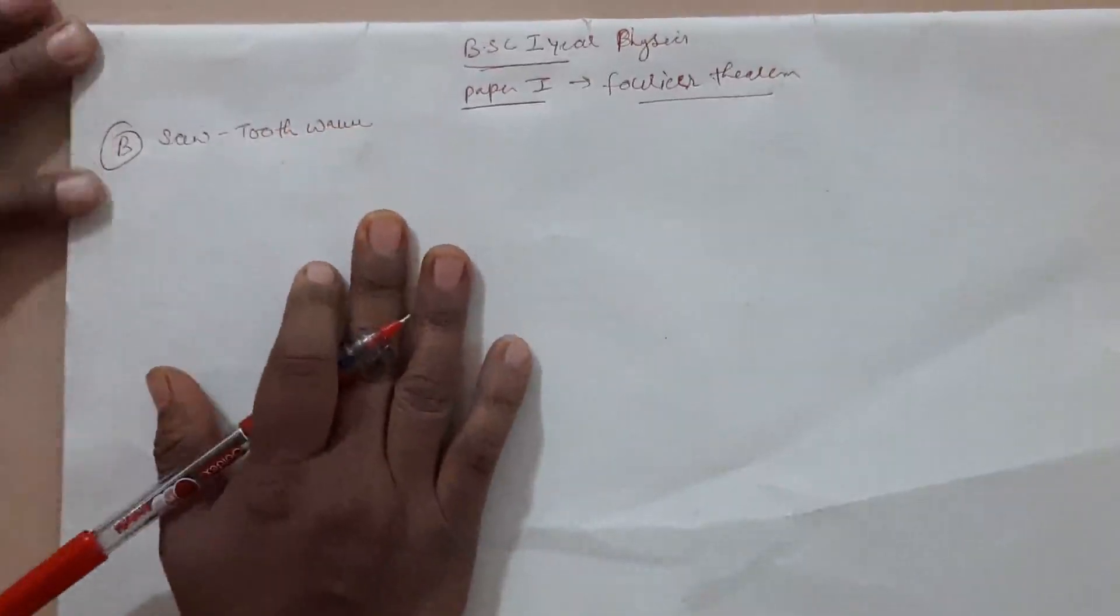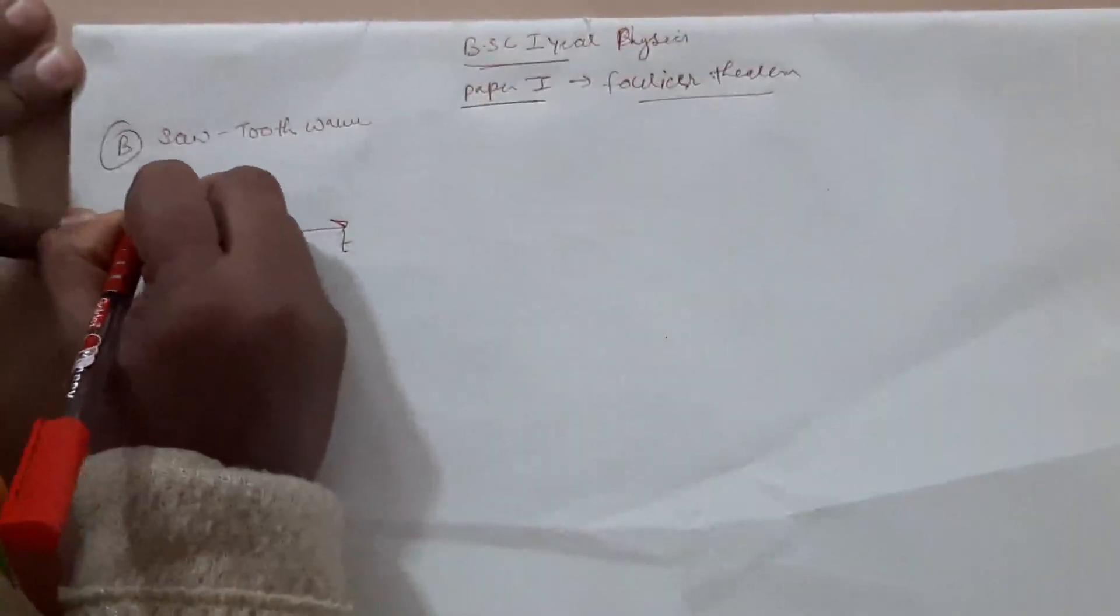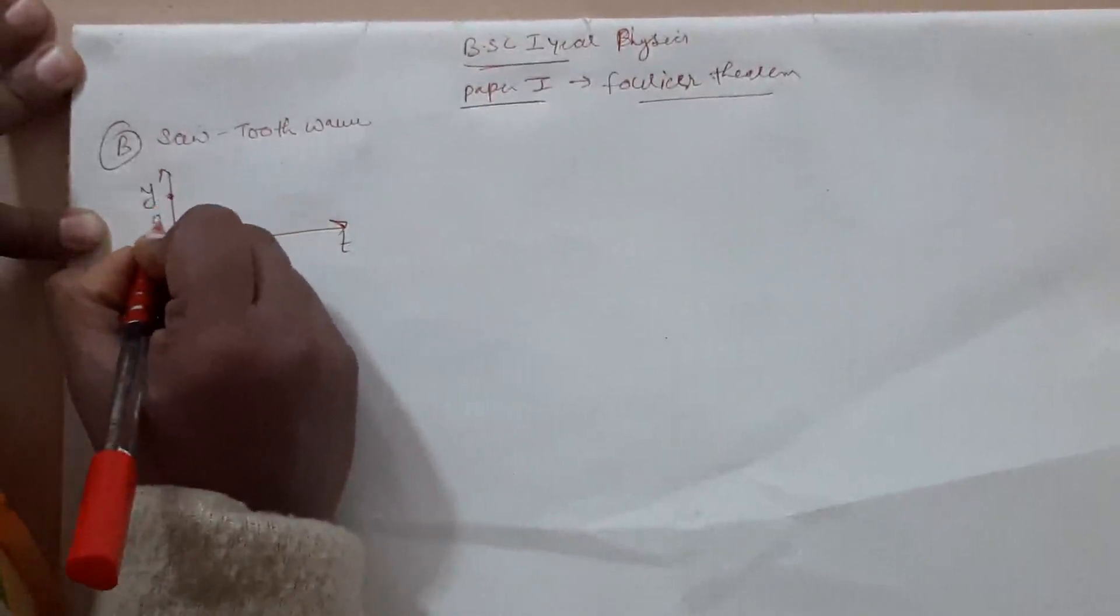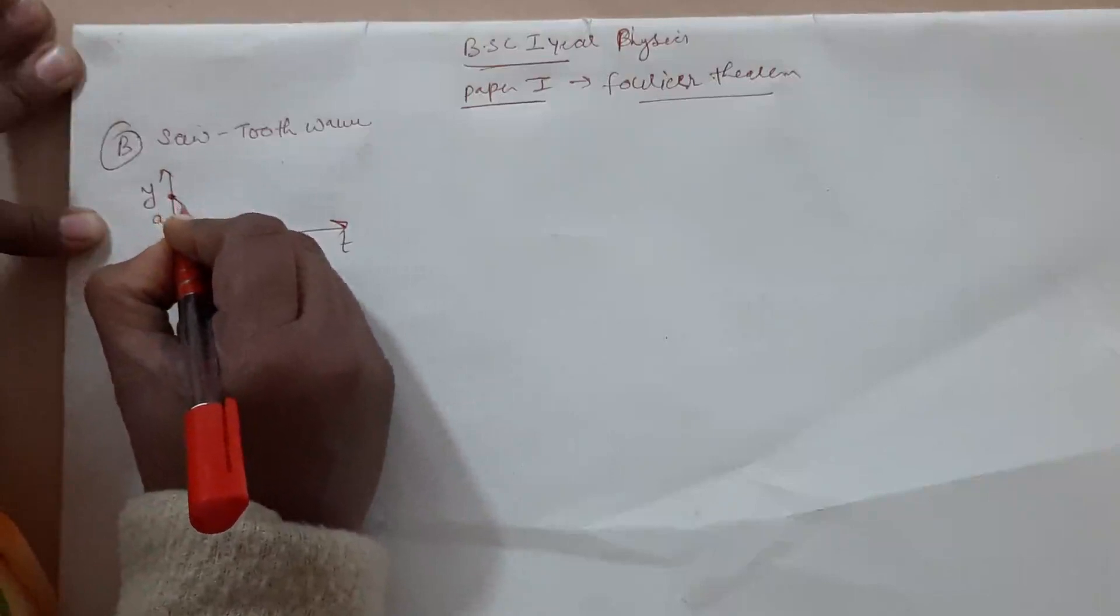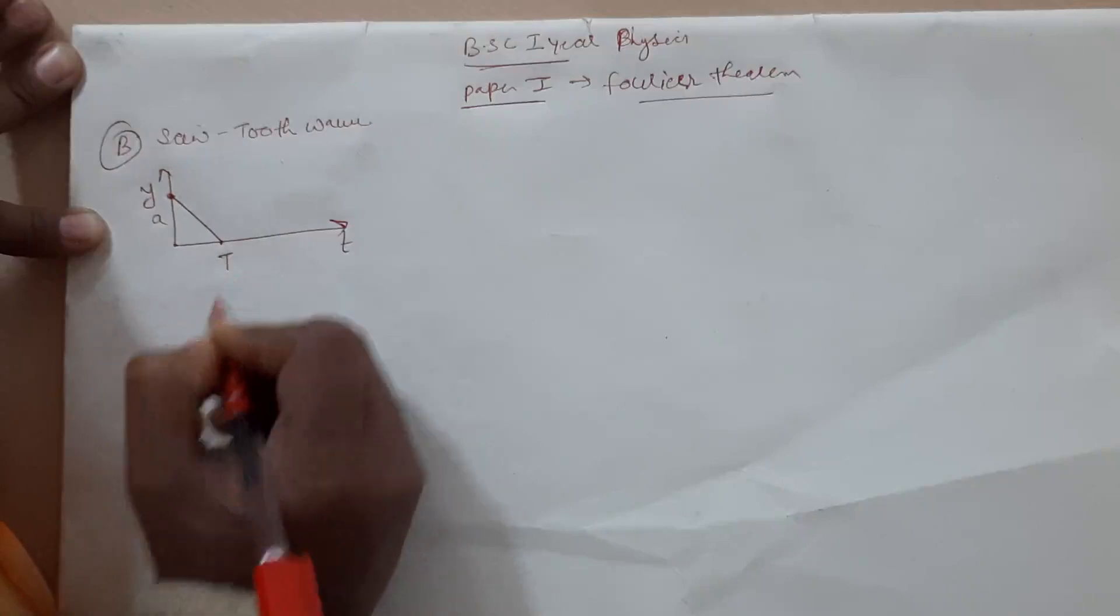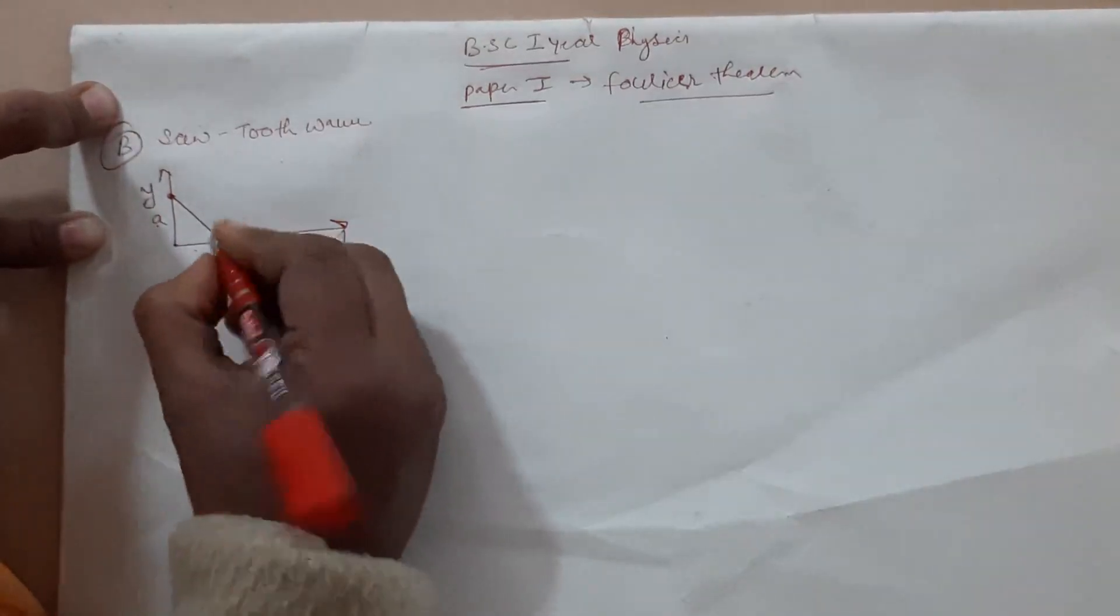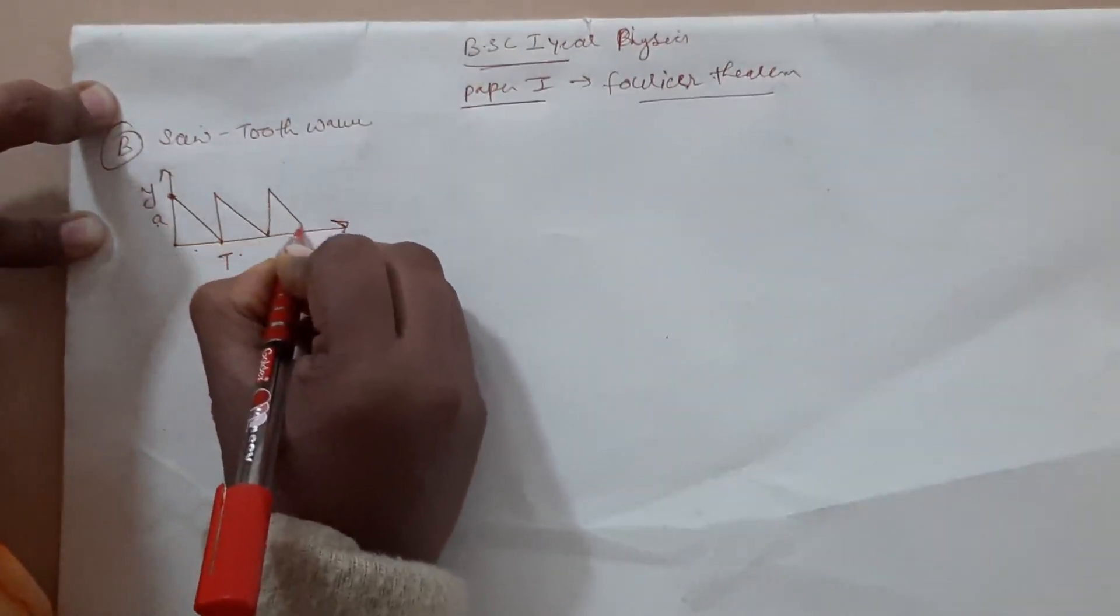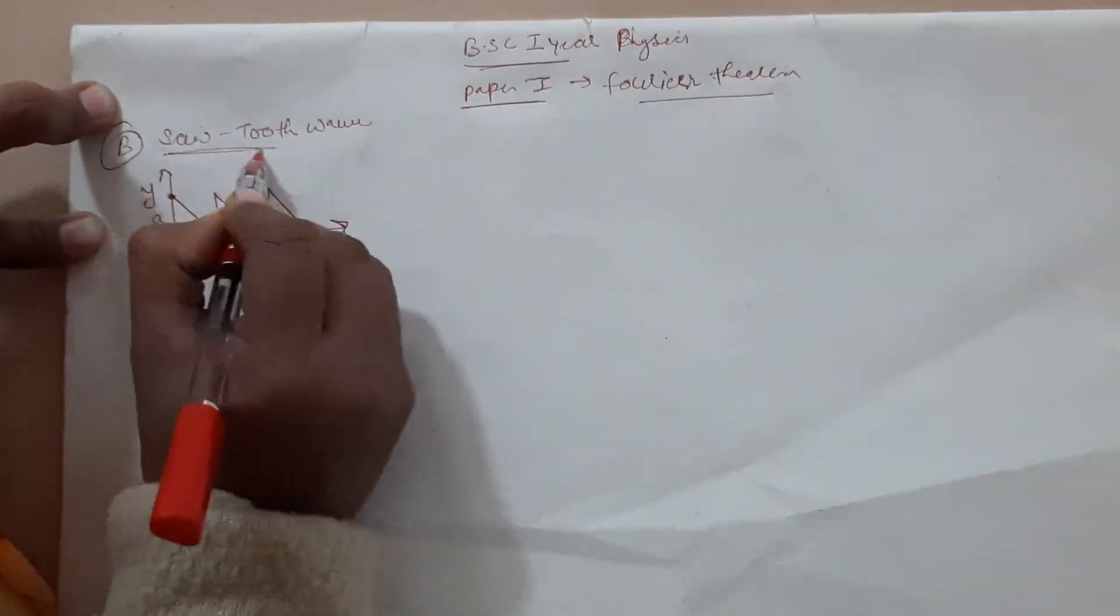Saw tooth wave can be drawn as a graph between T and Y. When T is zero, then A will be maximum. When T will increase, the value will decrease. At the maximum time, when T is equal to T, then Y will be zero. Similarly, we can draw the rest of the graph. This whole tooth is shown in the structure. So it is called a saw tooth wave.